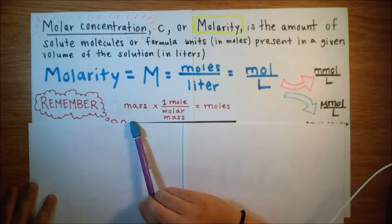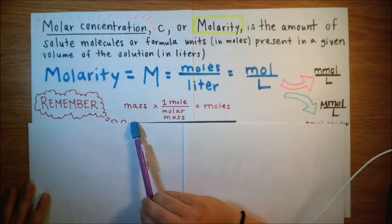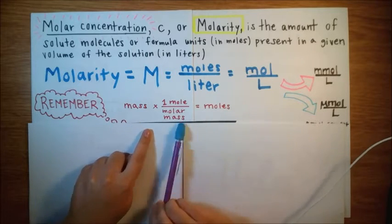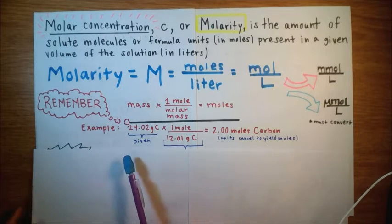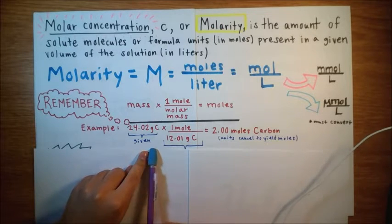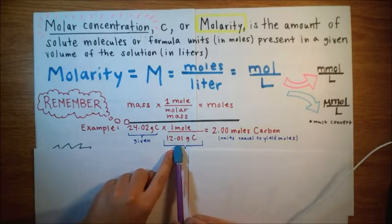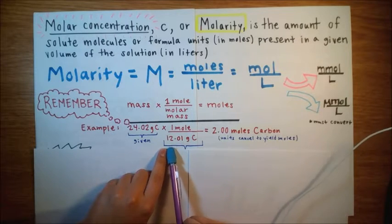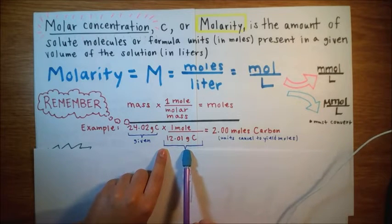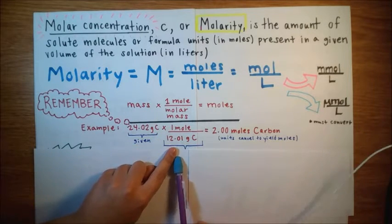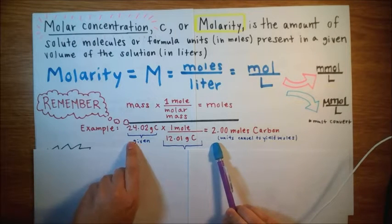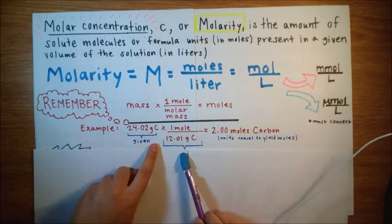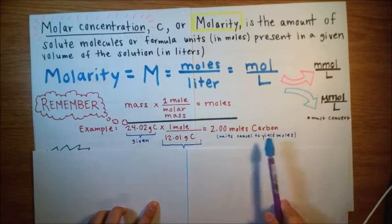If you're given a value that is a mass in grams of an element or a molecule, you can convert this mass to moles by using the molar mass. Let's look at this example. So to convert grams of carbon to moles of carbon, we use the molar mass. This value is taken from the periodic table. 12.01 grams of carbon are in every one mole of carbon. That means that in 24.02 grams, we have two moles of carbon. So just make sure that your units cancel here. Grams and grams are canceling to yield moles.